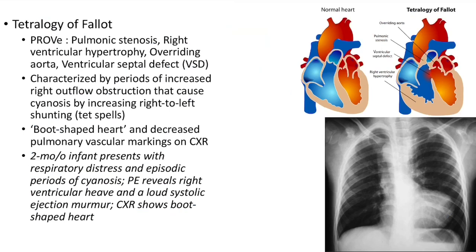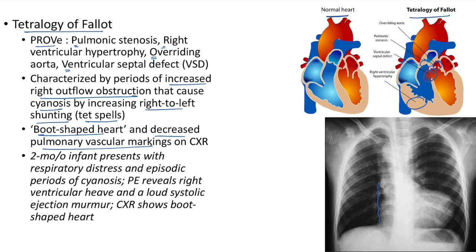Tetralogy of Fallot features can be remembered by the mnemonic PROV: pulmonic stenosis, right ventricular hypertrophy, overriding aorta, and ventricular septal defect. It is characterized by periods of increased right outflow obstruction causing cyanosis by increasing right-to-left shunt — known as tet spells. Chest X-ray shows boot-shaped heart and decreased pulmonary vascular markings.